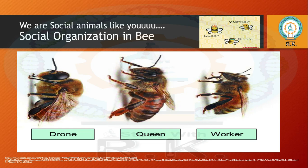Next is the drone — the only male member of the colony. Drones can live up to approximately sixty days. Sting and wax glands are absent in drones. Drones develop from unfertilized eggs. The sole duty of a drone is to mate with the virgin queen bee, and after mating the drone immediately dies.